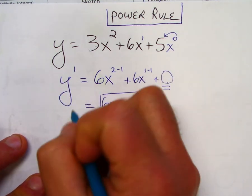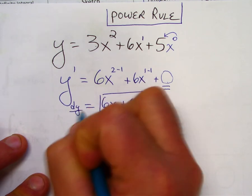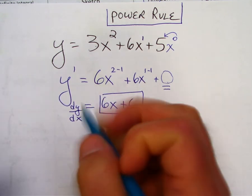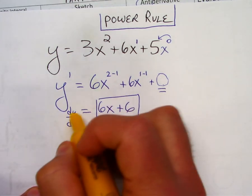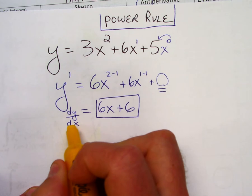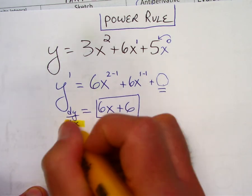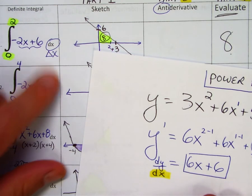Another notation for y prime is dy over dx. Calculus is the mathematics of change. D stands for delta. It's the change of y with respect to the change of x. So there's that little dx symbol again, which is always on an integral.